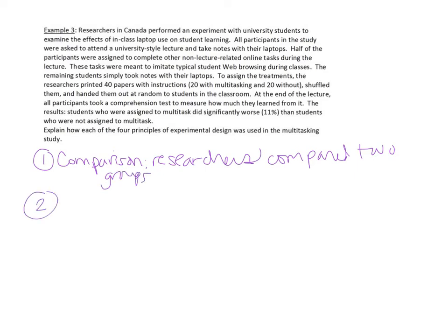The next principle is control, which is one of the more confusing ones. Several variables were controlled here. First, all participants were in the same exact lecture — if they had gone to different lectures at different times of day, that might have affected the outcome.